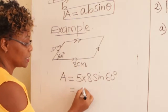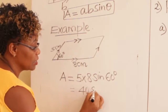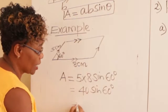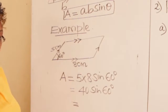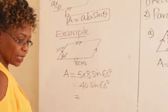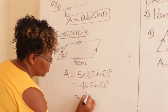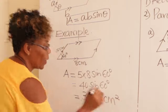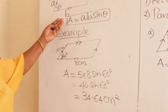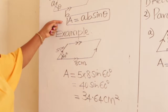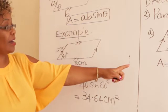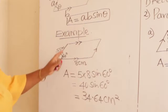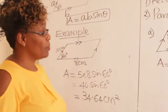This gives us five times eight, which is 40, times sine 60 degrees. Using a calculator, you should get 34.64 centimeters squared. So this is a totally new formula — the very first rectangle formula you already knew from primary school. Let us go to the next quadrilateral.